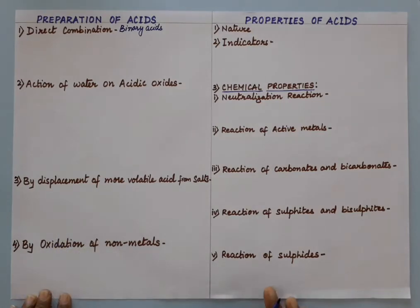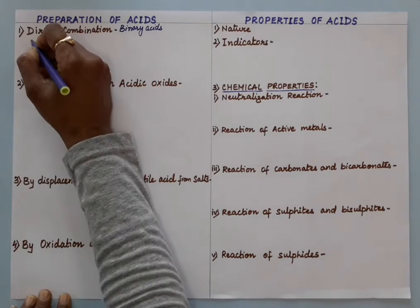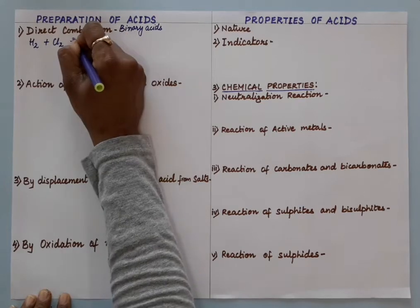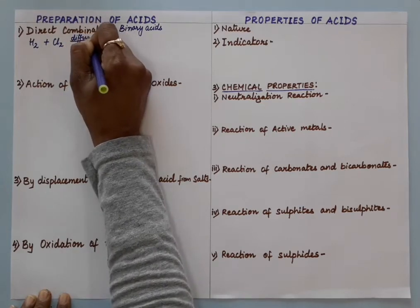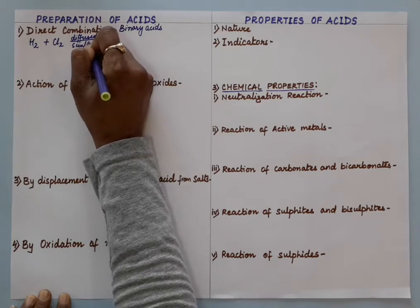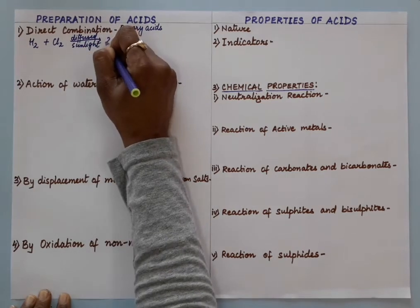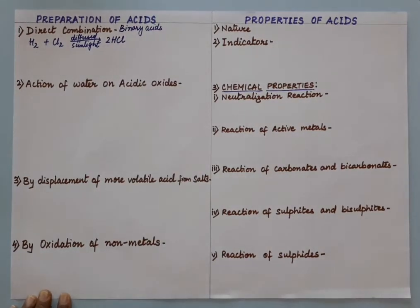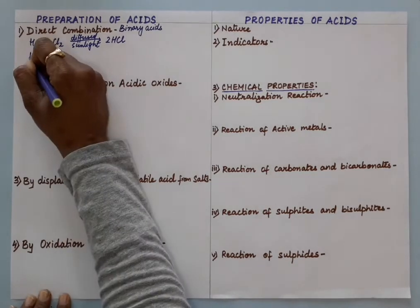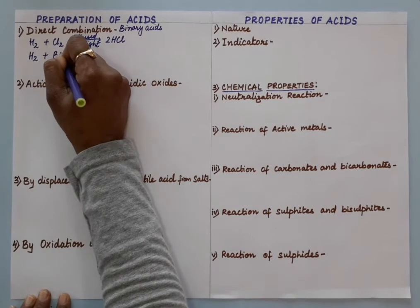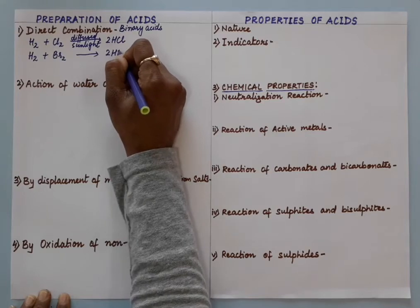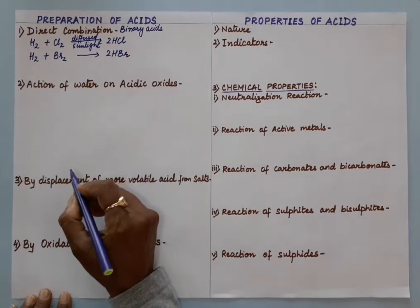Under appropriate conditions, hydrogen reacts with certain non-metals. For example, hydrogen when reacts with chlorine in diffuse sunlight, the reaction takes place smoothly and it will form hydrogen chloride. Hydrogen when reacts with bromine, it will give hydrobromic acid, that is hydrogen bromide. All these, when dissolved in water, form acid.